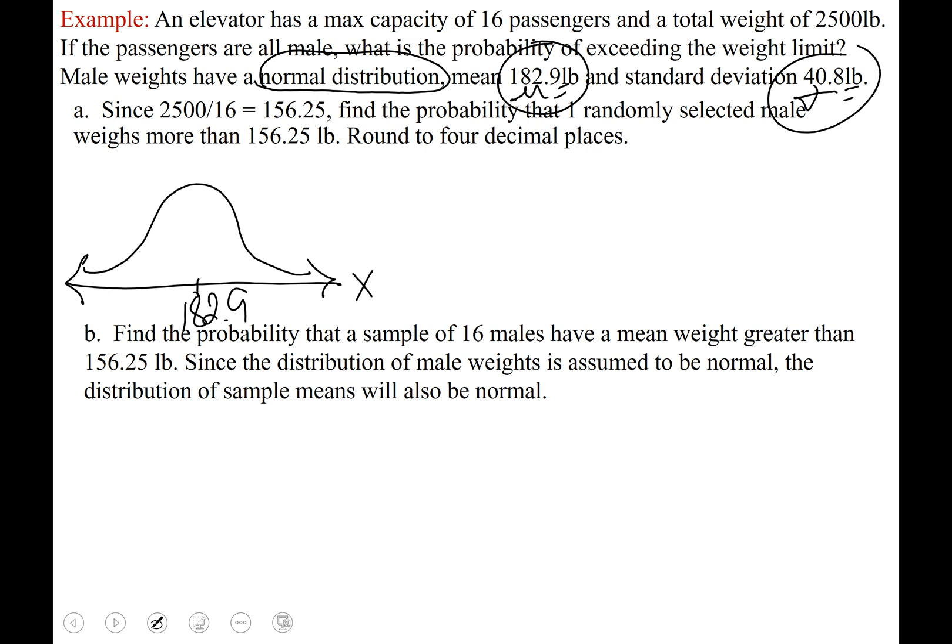Okay so we're being asked if all passengers are male what is the probability of exceeding the weight limit. Well let's go about this by taking that weight limit of 2500 pounds dividing it by the 16 passengers. We get 156.25 so let's figure out well what would the probability of randomly selecting one male and him weighing more than 156.25 pounds. Okay we know how to do this, central limit theorem is not coming into play, this is just review building up to the central limit theorem.